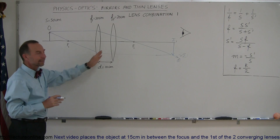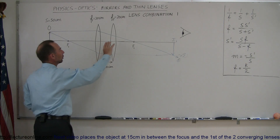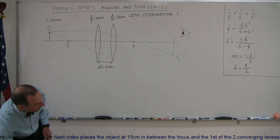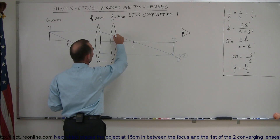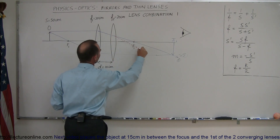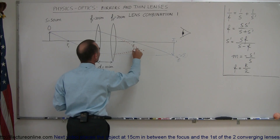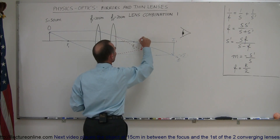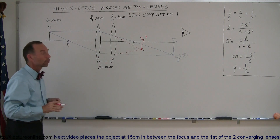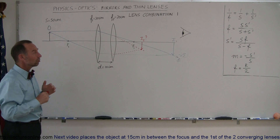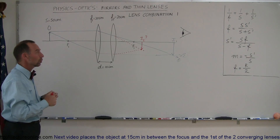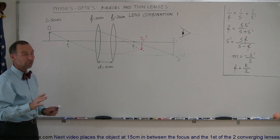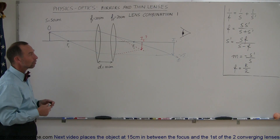Now, what do you think the second lens will do to these rays? We know there's a converging lens, so that will cause the rays to bend further. The ray will bend some more due to the second lens, and this ray will bend a little bit more due to the second lens as well. So the expectation is that instead of the image forming there, the image will form somewhere else. We'll use the equations to find the exact position and magnification of our first image.